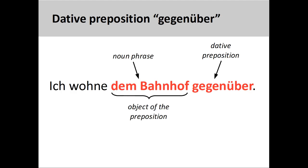The last preposition we will look at in this video is gegenüber, as in ich wohne dem Bahnhof gegenüber — I live across from the train station. It is important to note that the placement of this preposition is unusual: it comes after the dative object instead of before it, like the other prepositions we have examined thus far.